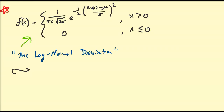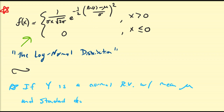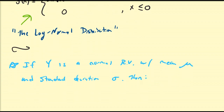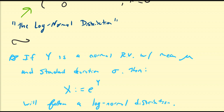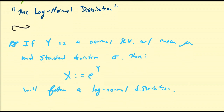Let's begin by discussing where this log normal distribution actually is built from. Let's assume that y is a normal random variable with mean mu and standard deviation sigma. Then the variable x, which is defined to be equal to e to the power of y, will follow a log normal distribution. This is pretty much the main case — if you take the normal distribution and you exponentiate it, then the shape of that will be your log normal distribution.